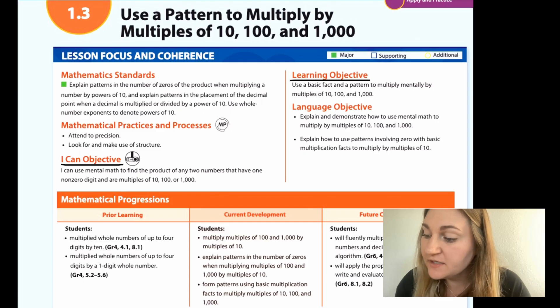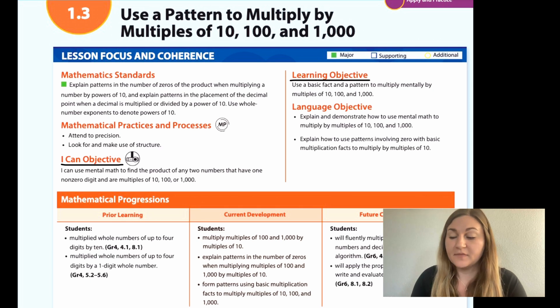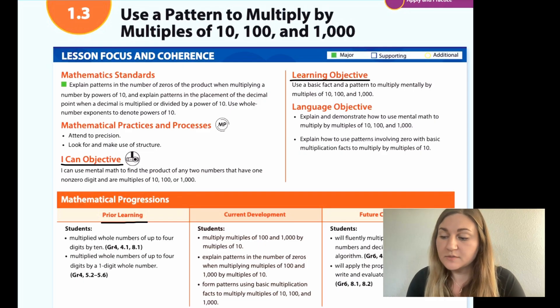The learning objective is that students should be able to use a basic fact and pattern to multiply mentally by multiples of 10, 100, and 1,000. Building upon prior learning in 4th grade, students multiplied whole numbers of up to 4 digits by 10 and by a 1 digit whole number.